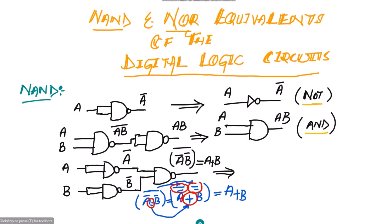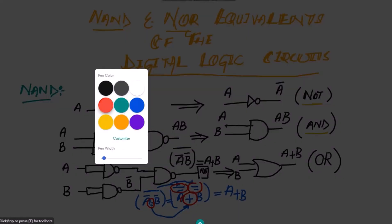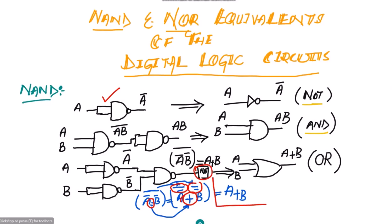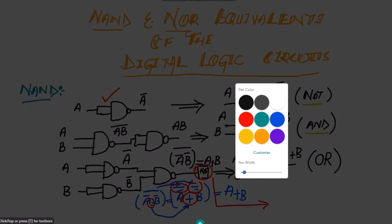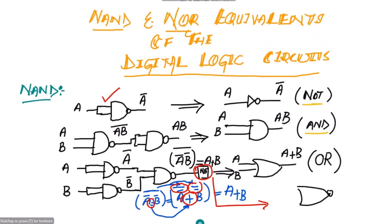The output A + B is exactly the functionality of an OR gate with inputs A and B. If we want a NOR gate, we can connect an inverter (NOT gate) to the output of this OR configuration. The result is a NOR gate where two inputs A and B are applied and the output is (A + B)'.